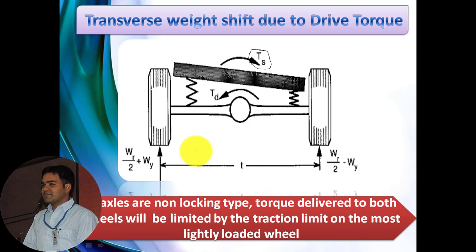The total load on the rear side, which we have already discussed in the dynamic axle load theory, is indicated by WR. This total load WR is distributed between the two wheels, so the load on each wheel is WR divided by two. WY stands for the lateral or transverse weight shift due to the drive torque. In this case, the drive torque is in the counter-clockwise direction, so the transverse weight WY is added towards the left-hand side and subtracted from the right-hand side.